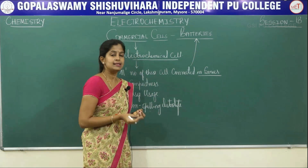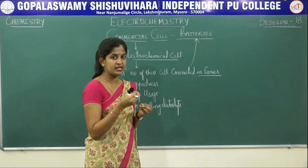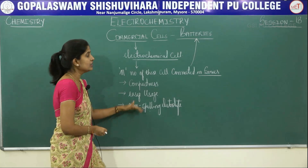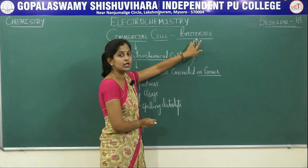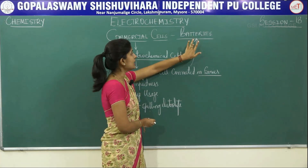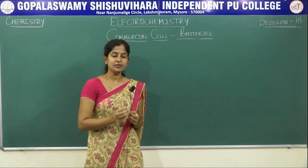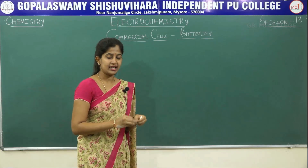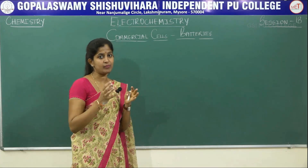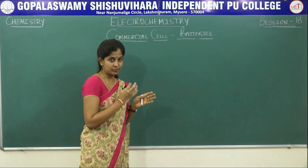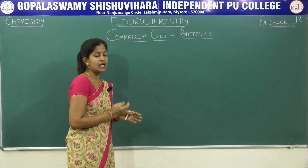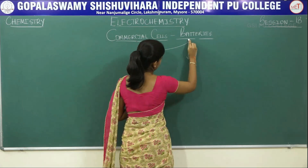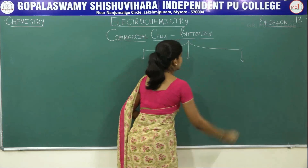These batteries produced from electrochemical cells are of three types. The first one is your primary batteries.